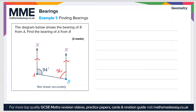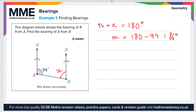The rule for co-interior or allied angles is that they add up to 180 degrees. So 94 plus X equals 180 degrees. If we want X, we do 180 minus 94, which equals 86 degrees. That's this angle X, but the question wants us to find the bearing of A from B.